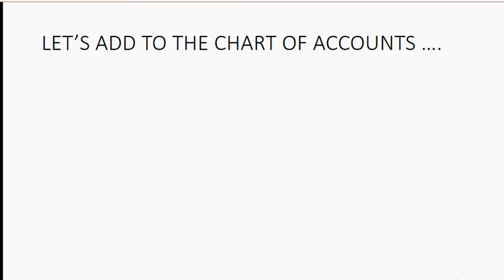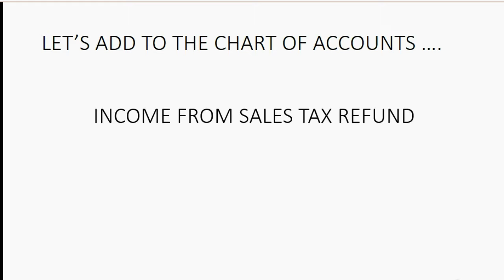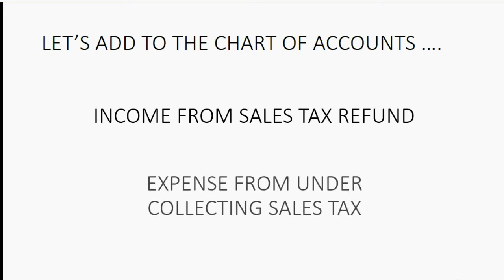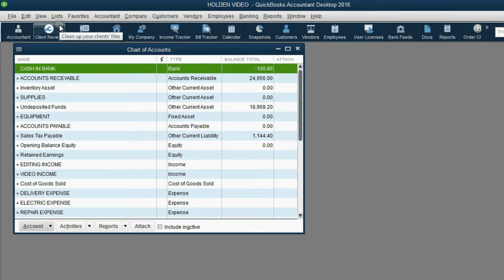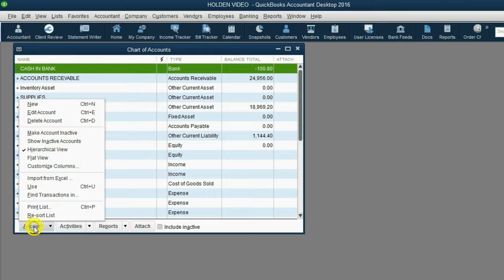Let's add to the chart of accounts: Income from Sales Tax Refund, and Expense from Under Collecting Sales Tax. They should both be an other income type and other expense type of account. From the main menu, click List, Chart of Accounts. Then in the bottom left, click Account, New.